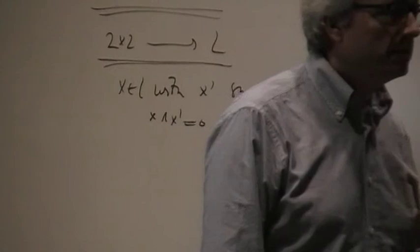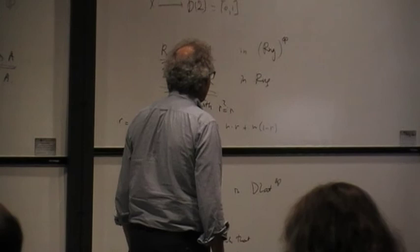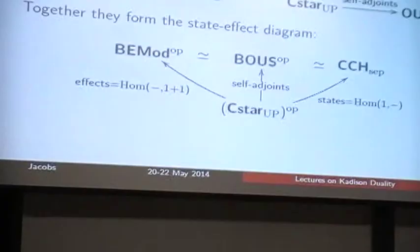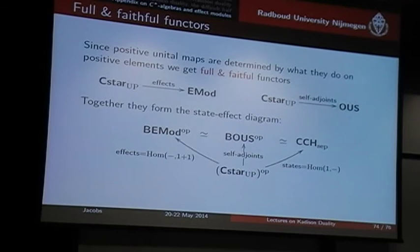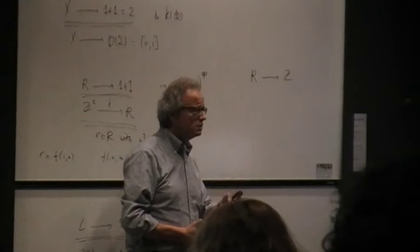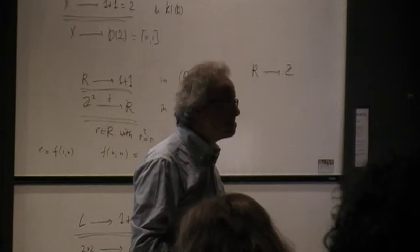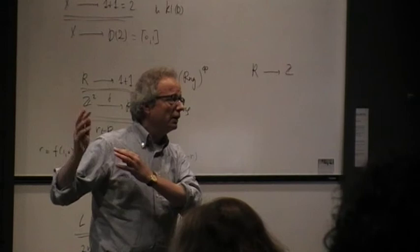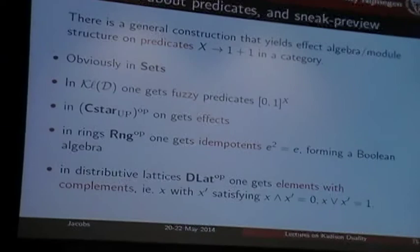I'm curious if you know more examples. One thing I'm also curious about: in the previous picture, I said the states are points, and if I translate this back to rings, what are the states? The states are ring homomorphisms to Z. What are they? Are they also some sort of characters, or do they form a spectrum for rings? Are they used in duality theory? Given the general character of this theory, I'm pretty sure they must have some relevant meaning. To conclude, the predicates in distributive lattices are elements which have a complement, and they form a Boolean algebra.